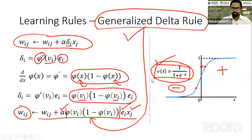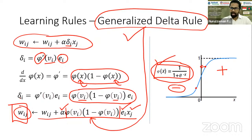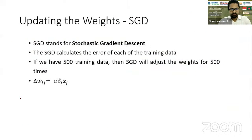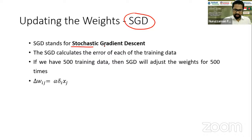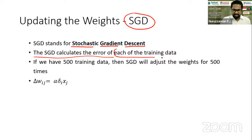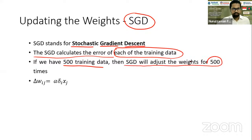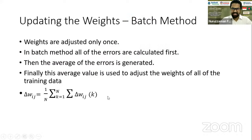Now we have learned one practical rule to train the network. This rule tells us how to update the weight, but the topic of actually applying that update is the weight update methods. There are many different ways, and we will focus on the simplest one: SGD, which stands for Stochastic Gradient Descent. SGD calculates the error of each training data point. If we have 500 training data points, SGD will adjust the weight 500 times. That is the direct application. We mention it to understand that there is something else waiting — the batch method.